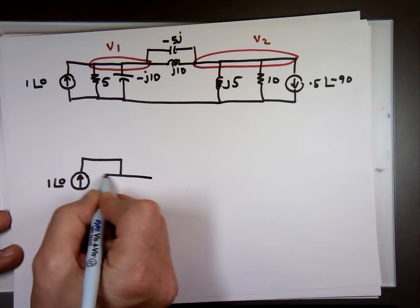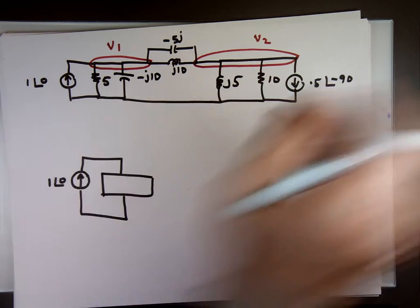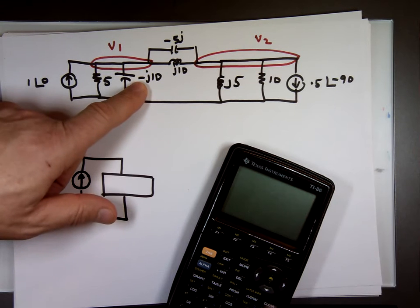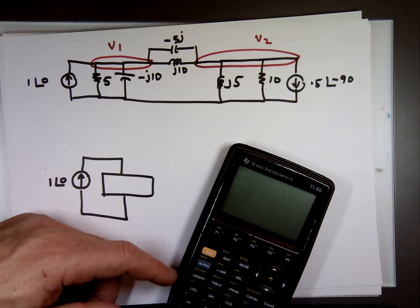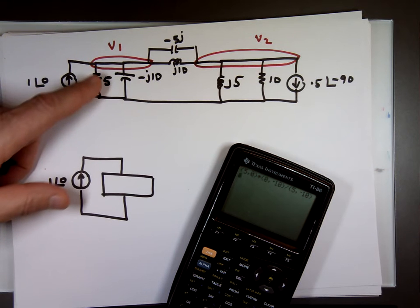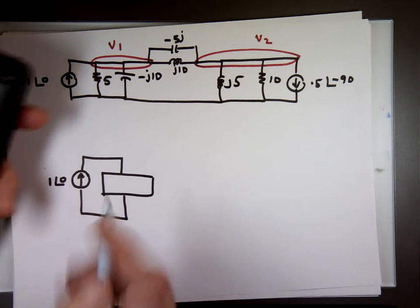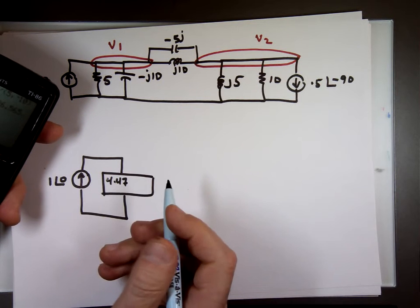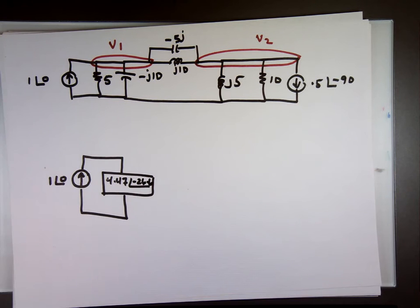Now these two are connected in parallel, so it's the product over the sum. The product of these two over the sum of them. If I go to my calculator, 5 times negative 10j divided by the sum of them, 5 comma 0 times 0 comma negative 10, divided by 5 comma negative 10. The answer is 4.47, negative 26.6 degrees.